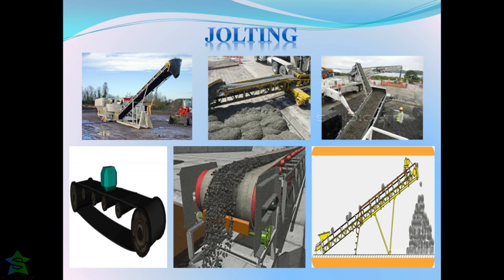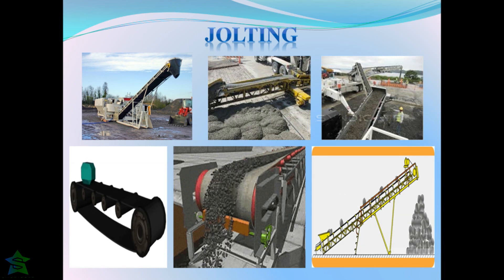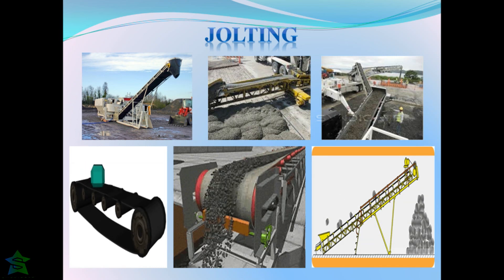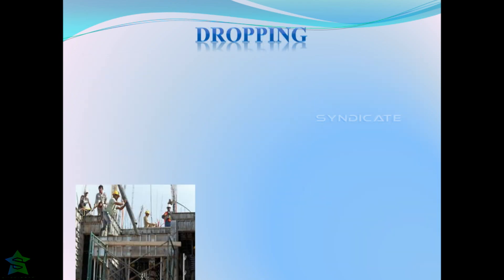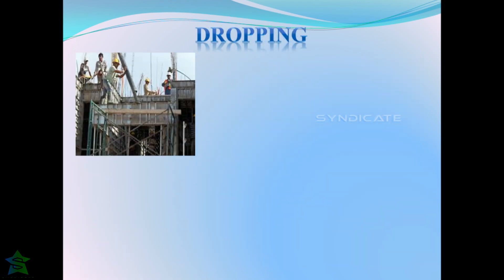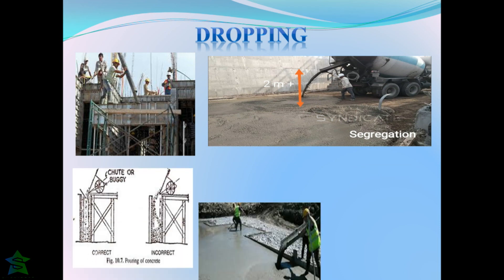The process that takes place when concrete is transported is called jolting. When concrete is transported from bottom to top or from one place to another using conveyor belts, wheelbarrows, long lifts, etc., the materials in concrete will be shaken. When shaken continuously, coarse aggregate separates out from the cement slurry, causing segregation.